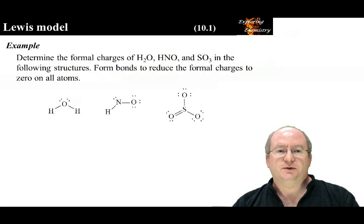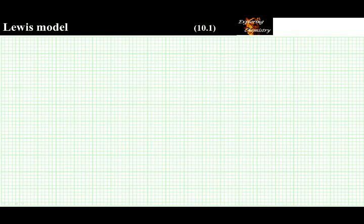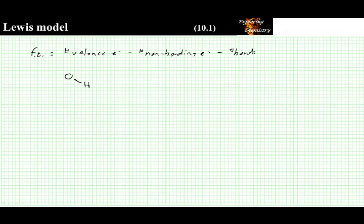So now we're going to determine the formal charges of these three entities and form bonds to reduce the formal charges to zero. To begin, let us remind ourselves of the equation, the formula for calculating formal charge. Formal charge is equal to the number of valence electrons minus the number of non-bonding electrons minus the number of bonds. Or, if you prefer, minus half the number of bonding electrons. The first structure we would want to apply this to was that presented here.